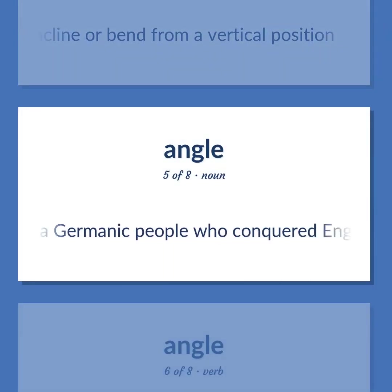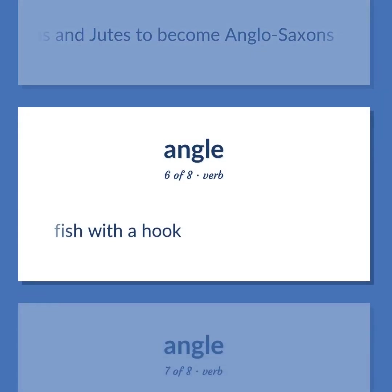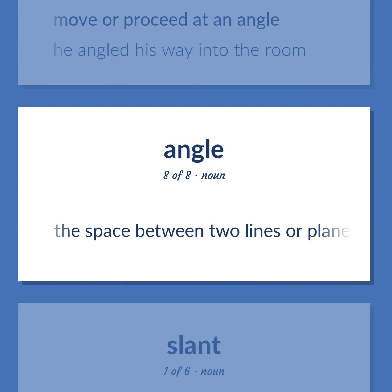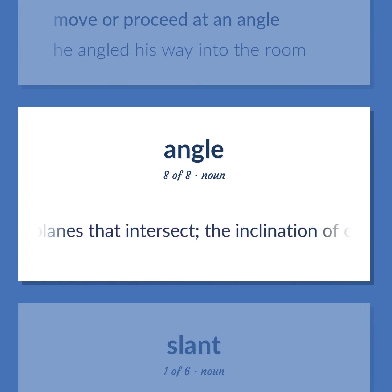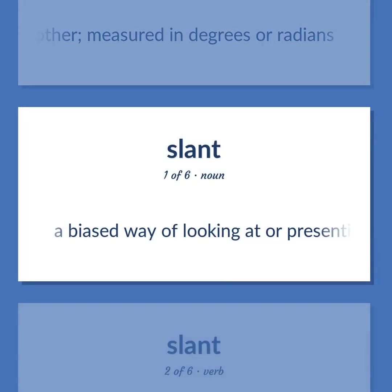Angle: A member of a Germanic people who conquered England and merged with the Saxons and Jutes to become Anglo-Saxons. To fish with a hook. To move or proceed at an angle. Example: He angled his way into the room. The space between two lines or planes that intersect; the inclination of one line to another, measured in degrees or radians. A biased way of looking at or presenting something.